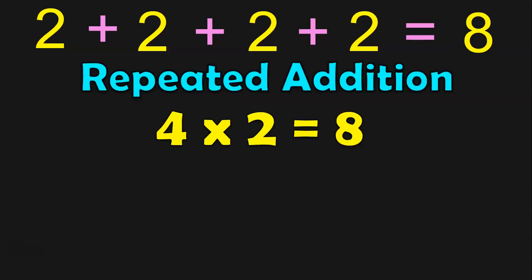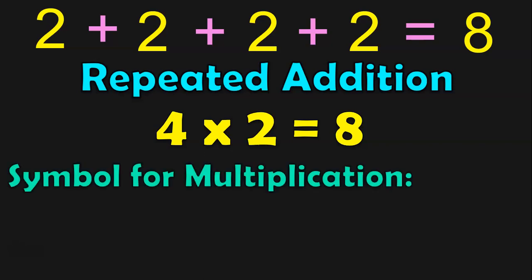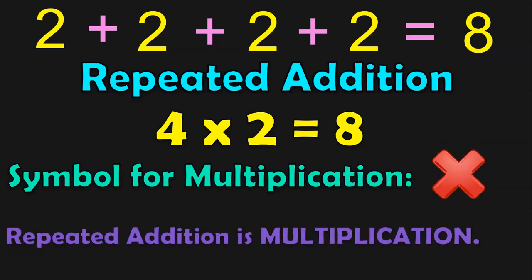How do you write this in Multiplication? 4 into 2 — 4 times 2 is equal to 8. The symbol for Multiplication is the 'into' sign. Repeated Addition is called Multiplication.